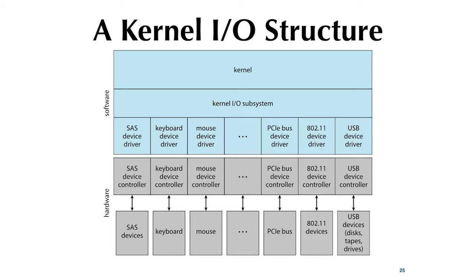The kernel I/O structure looks like this: you have the kernel, and underneath you have the I/O subsystem, which is closer to hardware. The code that talks to the hardware is the device driver. The bottom layer contains all the drivers — SCSI device driver, keyboard device driver, mouse device driver, USB device driver, and so on. Below that is actual hardware, with a corresponding controller. The controller is the interface between the host on one side and the device on the other.